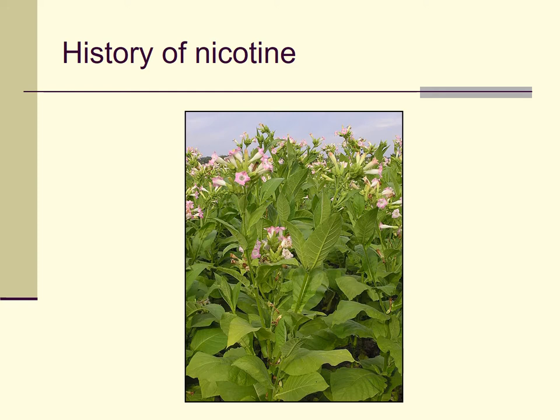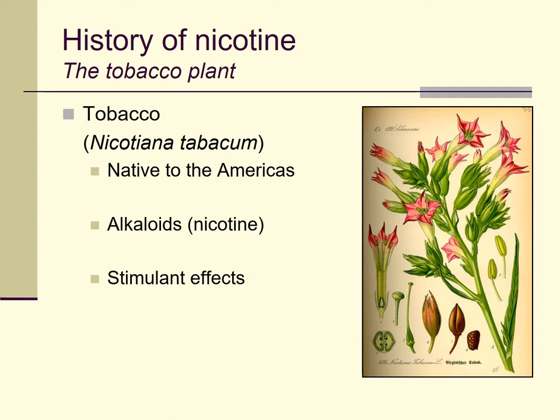In terms of history, the history begins, as it does for many drugs, with a plant — the Nicotiana tobacco plant, or more commonly just called the tobacco plant. As you probably know, it's native to the Americas. It contains several interesting alkaloids. Alkaloids are molecules that contain nitrogen and have pharmacologically interesting effects on animals, including humans. For the purposes of nicotine in humans, these are mostly stimulant effects, and we'll talk about some of those effects more in the next lecture.